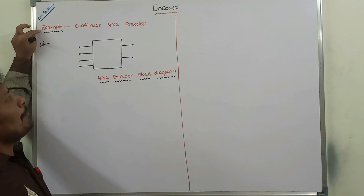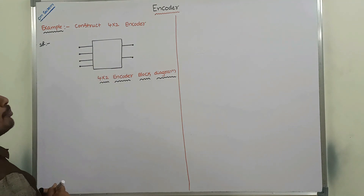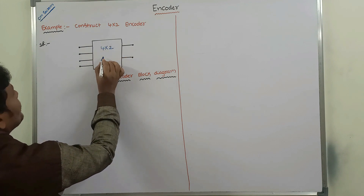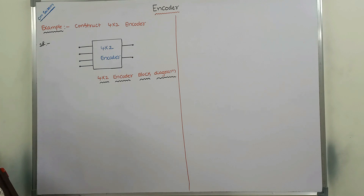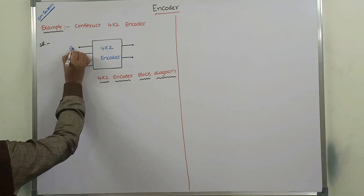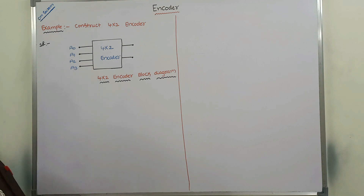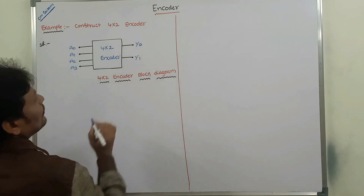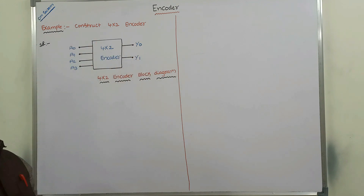The example is: construct a 4 by 2 encoder. The block diagram of a 4 by 2 encoder takes 4 inputs and produces 2 outputs. Hence, the name is 4 by 2 encoder. The 4 inputs are A0, A1, A2, A3. And it produces 2 outputs, that is Y0 and Y1.